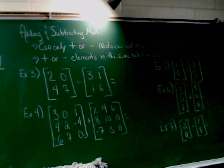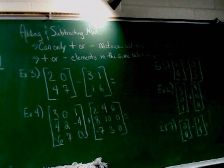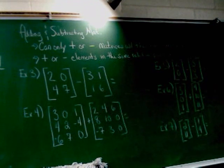There's three things you have to know. Two of them are up there. First of all, you can only add or subtract matrices with the same dimensions. So if this one is 2 by 2 and this one is 7 by 3, I can't add or subtract them. They have to be the exact same size.